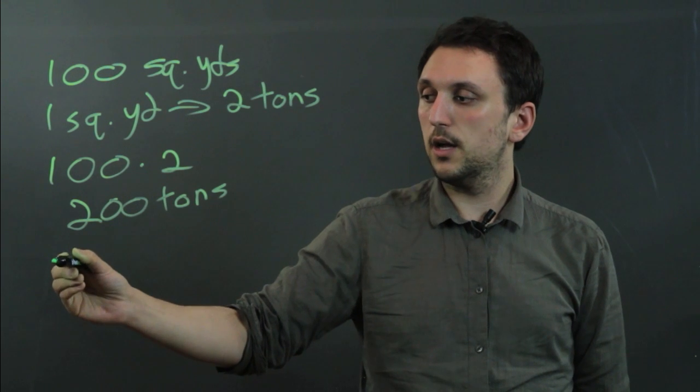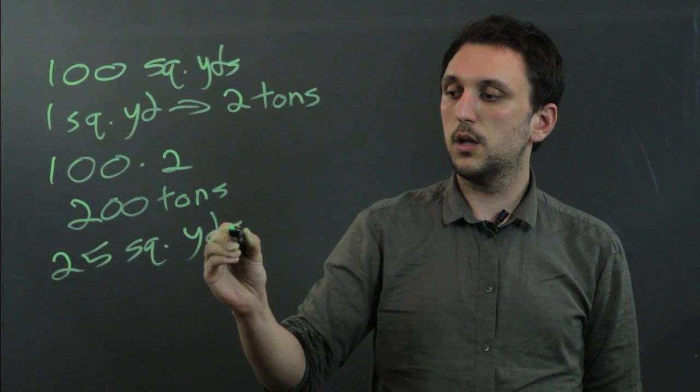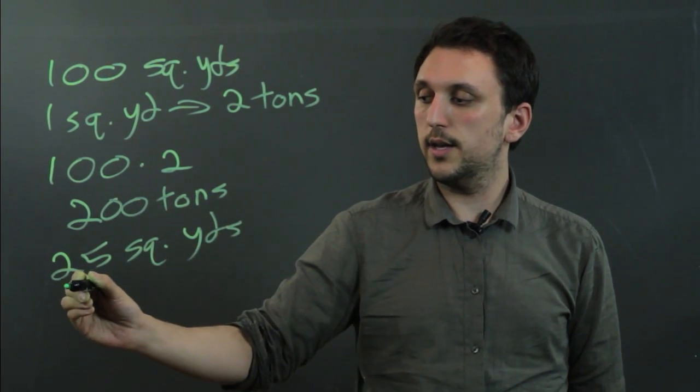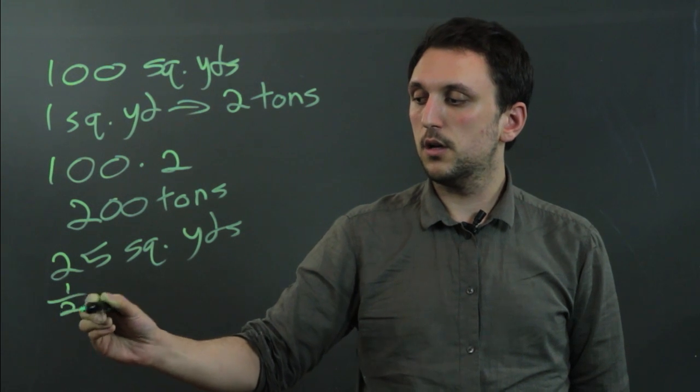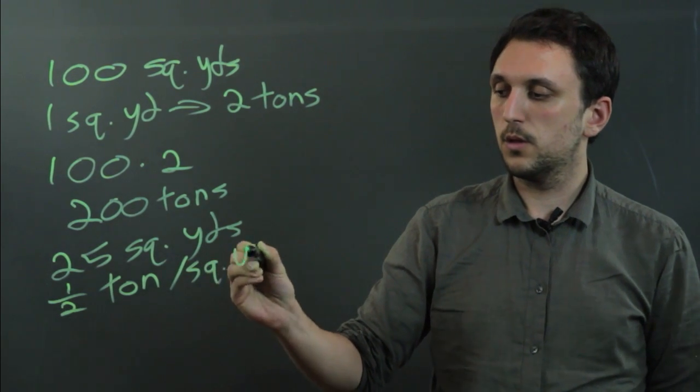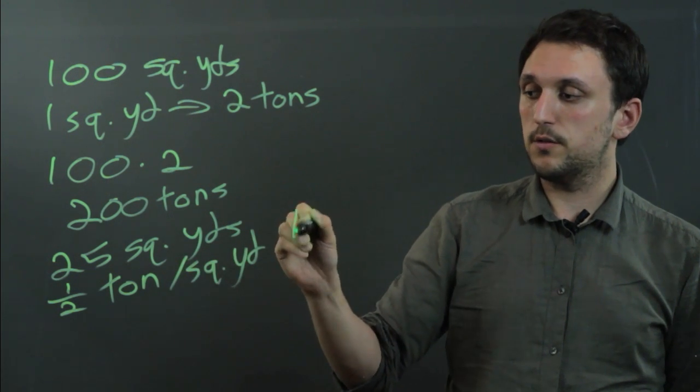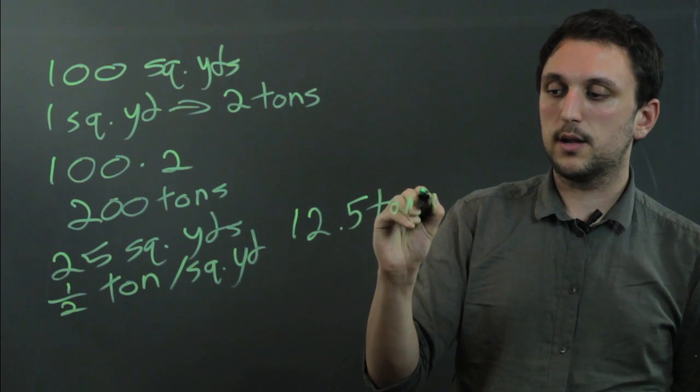Now if we had, say, 25 square yards, and we said it was half a ton per square yard, then we would have 25 times one half, which is 12.5 tons of rock.